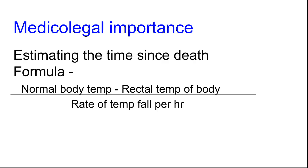The medico-legal importance of algor mortis is to estimate the time since death. The main formula used is: normal body temperature minus rectal body temperature, divided by the rate of temperature fall per hour.